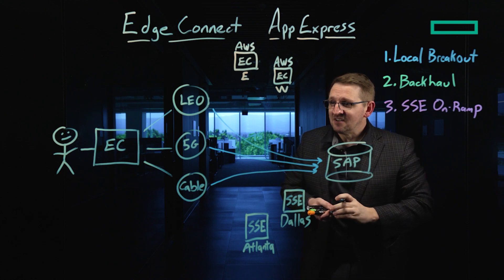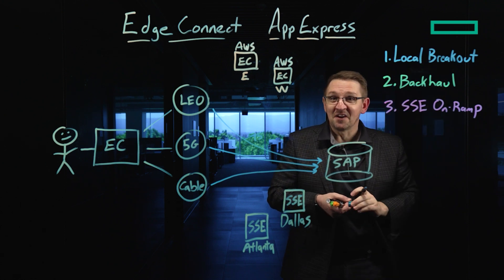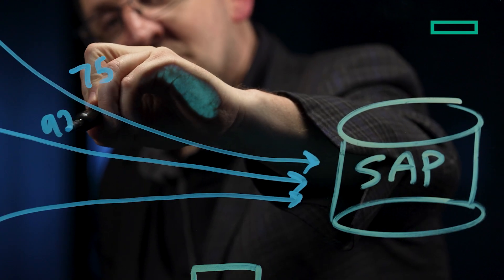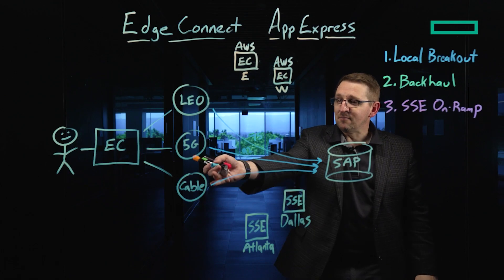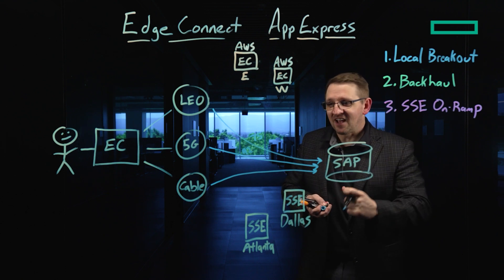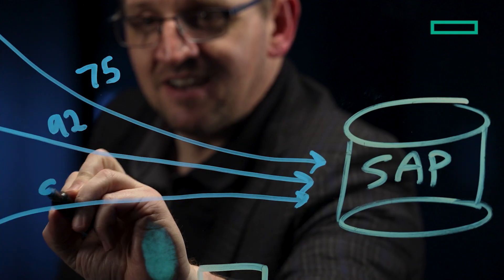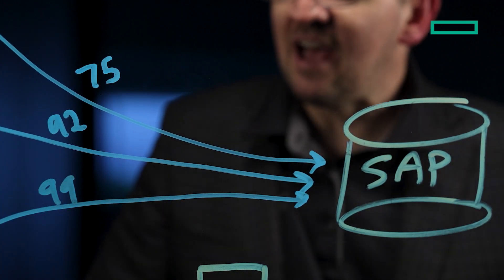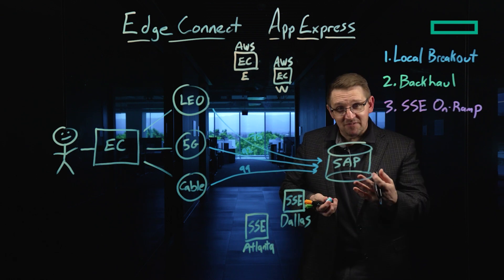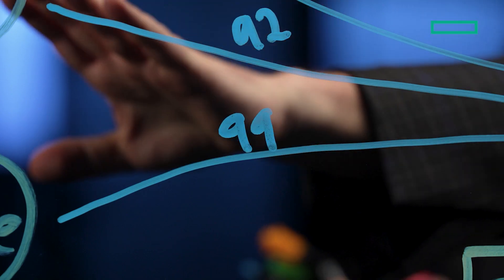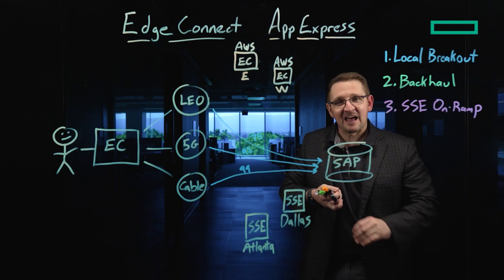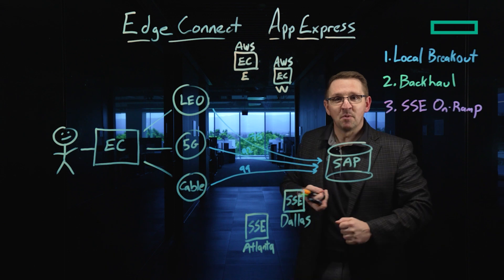The 5G connection — maybe we're right underneath the tower, very close to the 5G tower itself — so we score out maybe a 92. But for our cable modem, we've got low latency, it's a DOCSIS 3 connection, it's very solid, so we have a 99. What the EdgeConnect will do is look at which one of these paths has the best AppEx score. When the user wants to connect to the SAP server, it will pick the path with the highest score — so in this example, it would pick the cable modem.